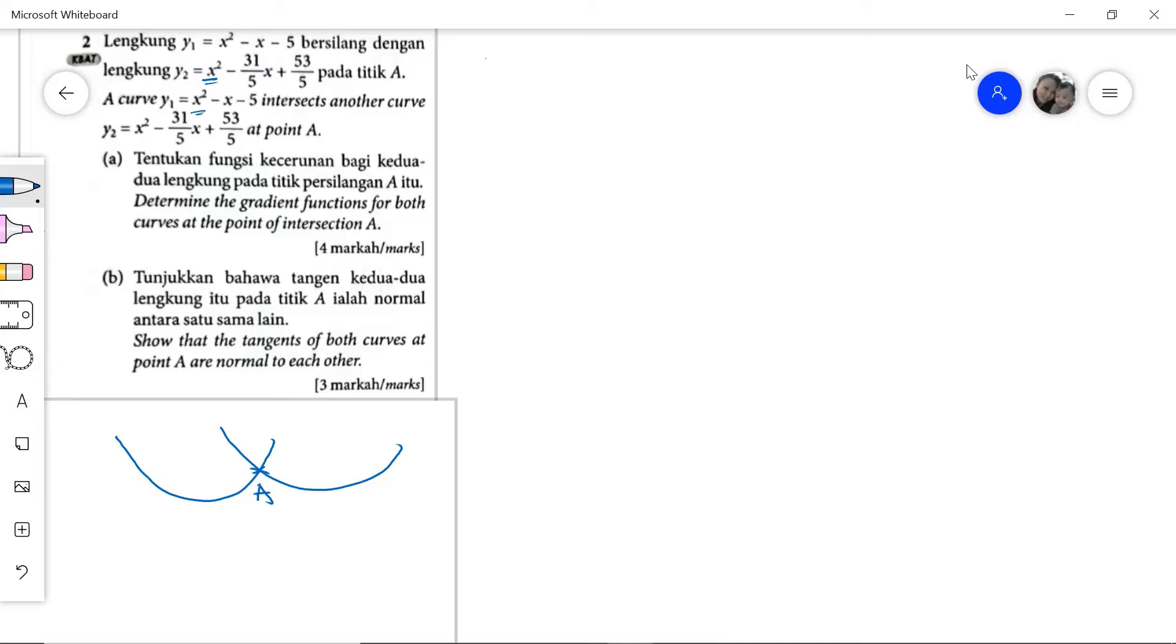For y1, the gradient function m_t1 equals dy1 by dx. After differentiation, we have 2x minus 1.